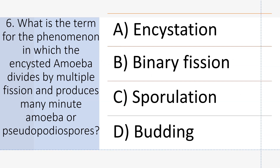What is the term for the phenomenon in which the encysted amoeba divides by multiple fission and produces many minute amoeba or pseudopodiospores? Answer C: Sporulation.